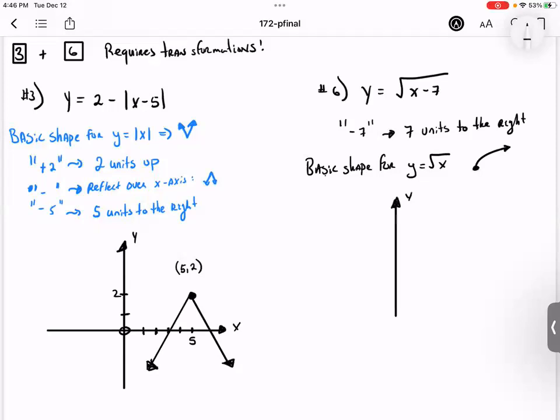Here's your y-axis, here's your x-axis. I go seven units to the right: one, two, three, four, five, six, seven. And I plot that point. That's my anchor point, seven comma zero. And then I draw that curve. So there you go, that would be y equals the square root of x minus seven. And that's how you do your transformations.